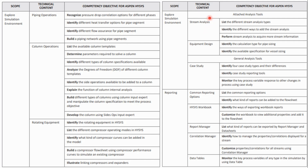For stream analysis, you should be able to list the different stream analysis options and perform stream analysis to get the required information — this part would most likely be included in your lab work. For equipment design, you should be able to identify the calculation type for pipe sizing and available specifications for vessel sizing. And for case study, you could be asked to vary one parameter and check its effect on other parameters — this is an important part especially for the lab work.